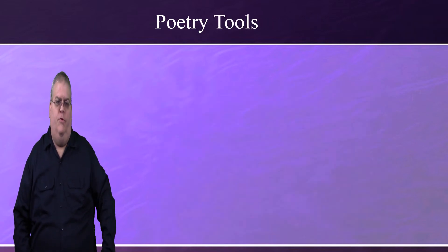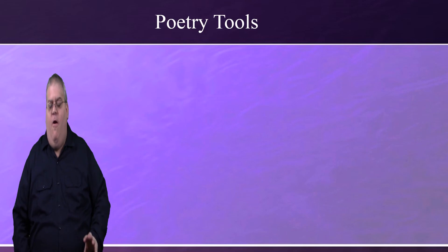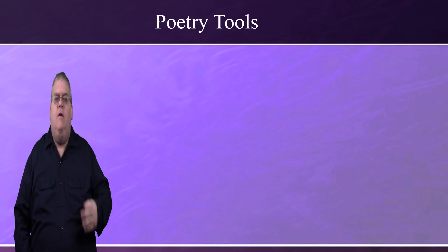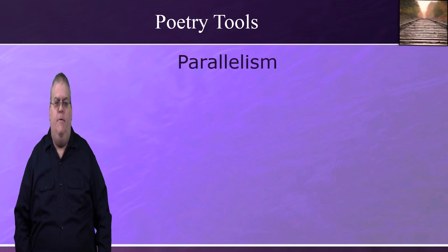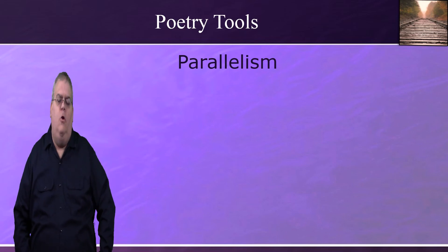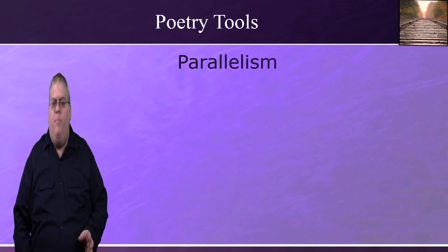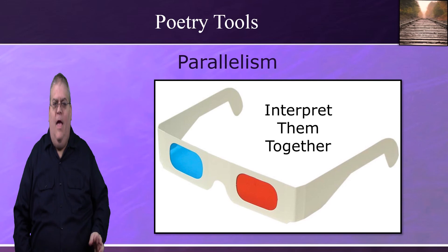That brings us to the tools of biblical poetry, which are closely connected with the characteristics. There are a number of tools for poetry, but for now I'm going to concentrate on just three of the most important. The first tool is parallelism. If indeed the author has purposely combined two or more ideas together, then we should interpret them together as a whole — as one combined idea, not as two separate ideas.